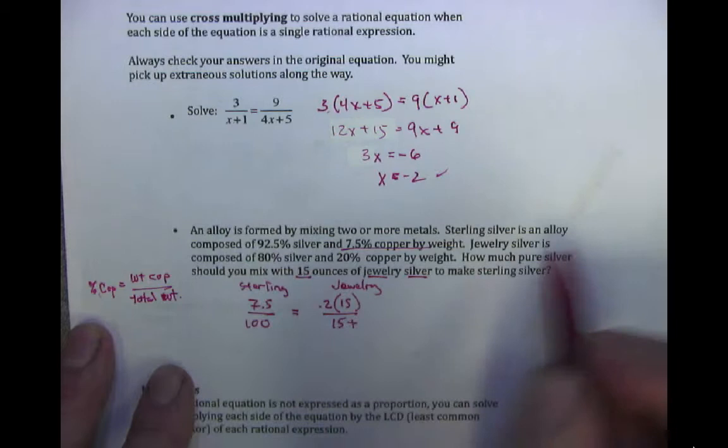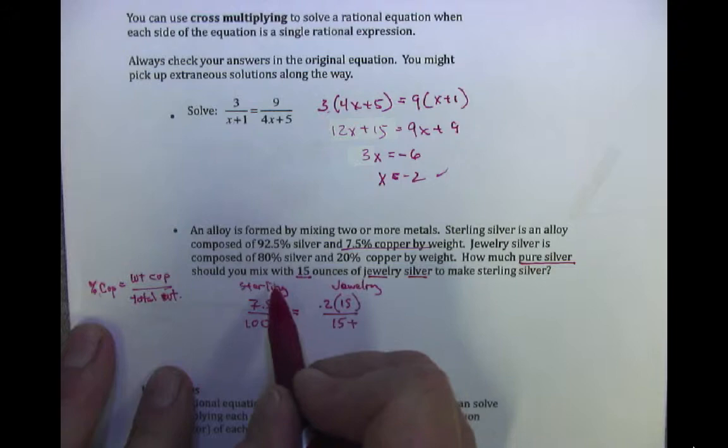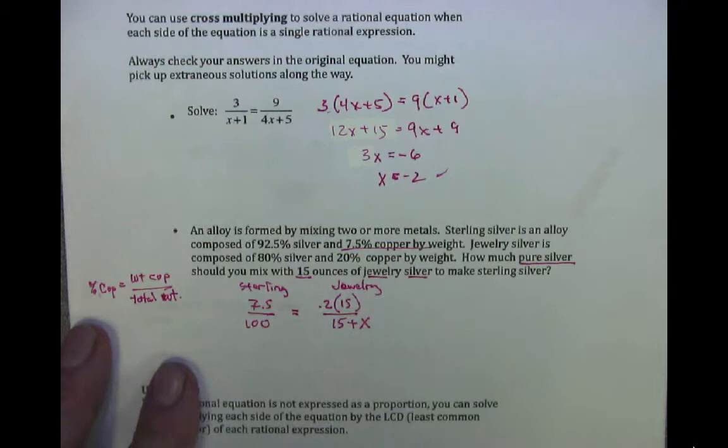The equal sign is there for a reason because I want to add something over here. It says how much pure silver should I mix with this 15-ounce mixture to make the jewelry silver equal to the sterling silver? I'm going to have to add something to that mixture — I'll call that x. At that point I can go ahead and just cross-multiply and solve for x.